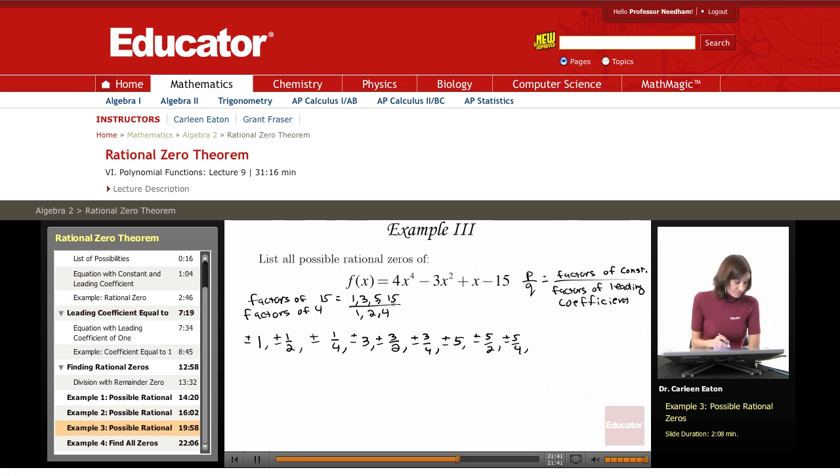Then 15. 15 over 1, just 15. 15 over 2. And then 15 over 4, plus or minus.